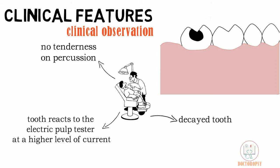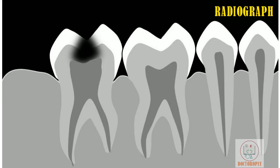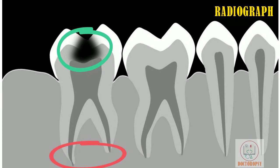On radiograph, a radiolucency is seen in the tooth but no radiolucency in the periapical area.